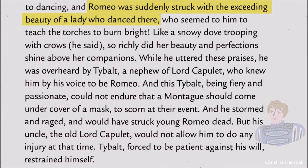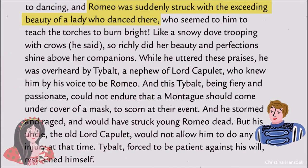Romeo was suddenly struck by the exceeding beauty of a lady who was dancing gracefully. Her dance and her beauty both attracted Romeo. He forgot Rosalind and his heart was swept away. Who was that lady? She was Juliet Capulet.